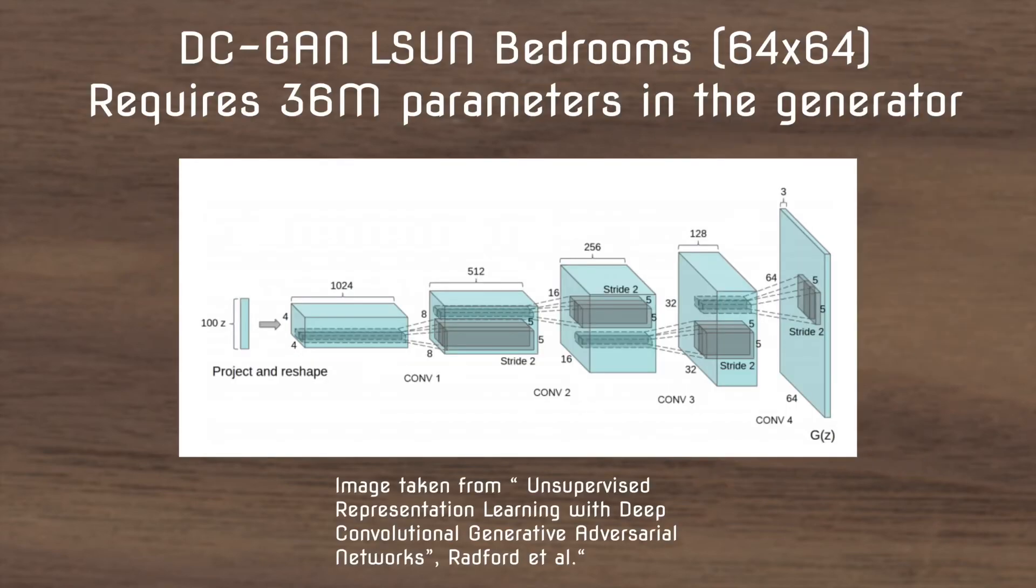This quickly just shows how the DC GAN that does LSUN bedrooms which is 64 by 64 requires 36 million parameters. Now 36 million parameters in a deep model means you need a lot of data to avoid overfitting.